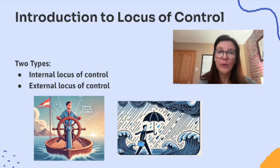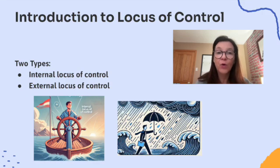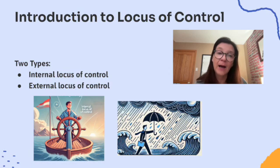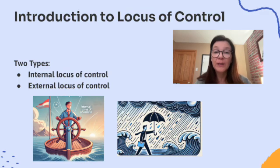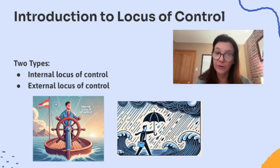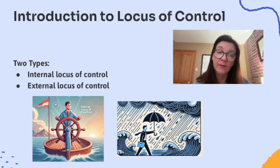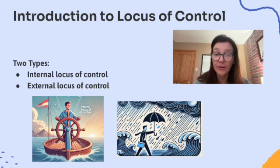We're going to start by talking about the locus of control. It's a concept in psychology that helps explain how people perceive control over the events in their lives. This concept is important because it influences how we think, feel, and act in different situations. The locus of control refers to the degree to which you believe you have control over the outcomes in your life. The key question is: who or what do you believe is responsible for your successes and failures?